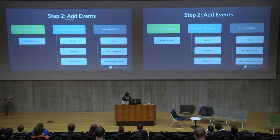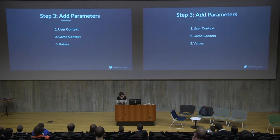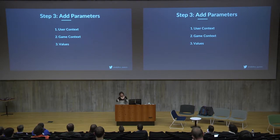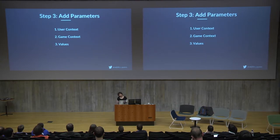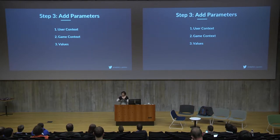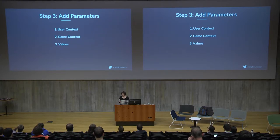Once you have events, you add parameters to indicate what happens around that event. When a round-end event fires, for example, you send the custom event and then a bunch of parameters. Parameters indicate why this event happened — there are three categories of parameters to consider.